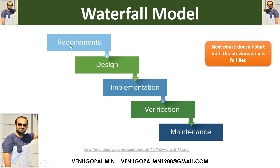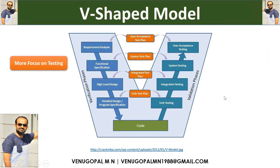The waterfall model follows these steps: requirements, then design, then implementation, then verification, then maintenance. The key characteristic of the waterfall model is that the next phase does not start until the previous step is complete. Requirement phase must be fully complete before design phase starts; design must finish before implementation starts; implementation must finish before verification starts. You cannot go back — each step must be completed before moving to the next.